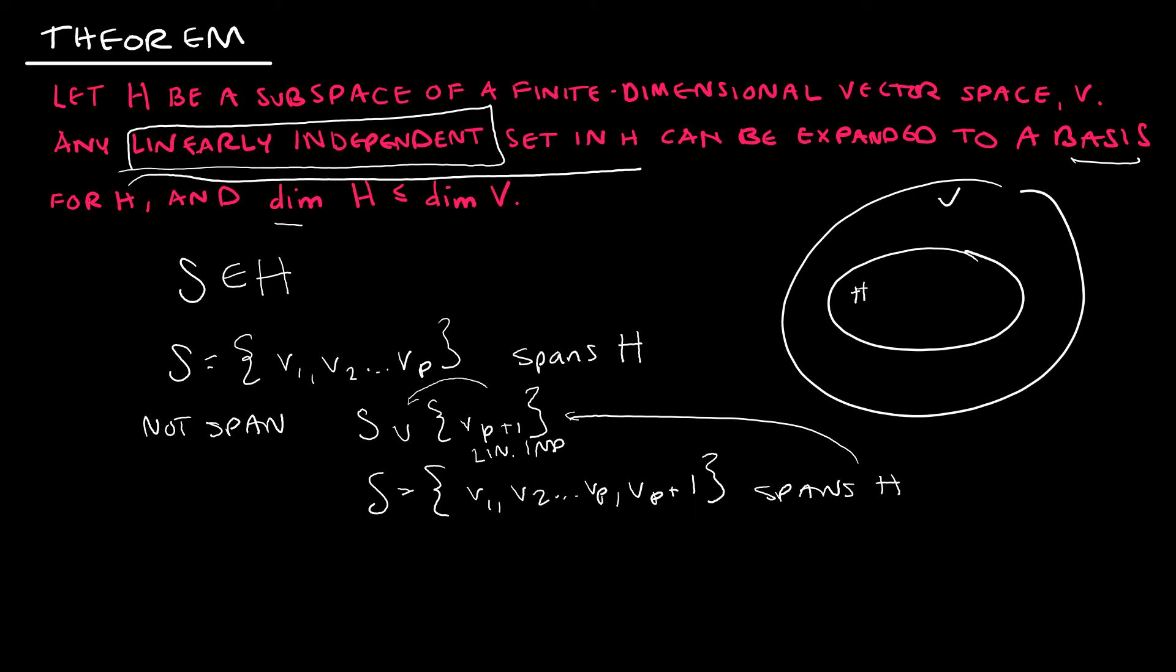And then it tells us that the dimensions of H is less than or equal to the dimension of V. Well, that one should be pretty easy to think about because we know that H is a subspace, which means the vectors within H are all within V. So we know we're not going to go past the number that is in V.